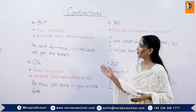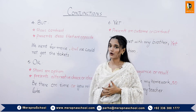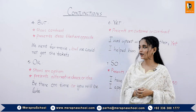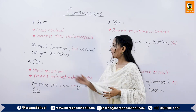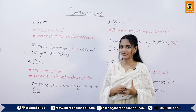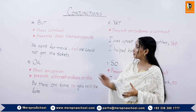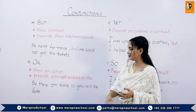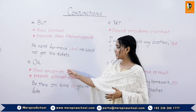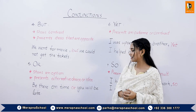The fourth coordinating conjunction is 'but'. 'But' is used to show contrast and it presents ideas that are opposites. For example: 'We went for a movie but we could not get the tickets.' In this sentence, 'but' is separating the sentence to show the opposite idea.